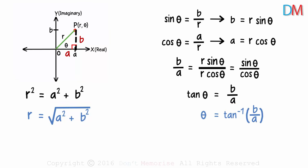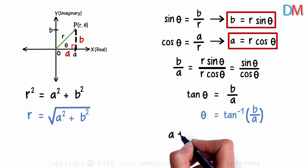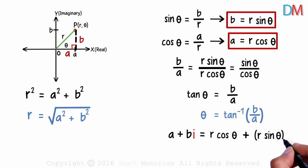So if we have the real and imaginary part of the complex number, we can represent it in the polar form as well. In the process of doing this, we've also derived a couple of other relations. a is r cos theta and b is r sin theta. So the complex number a plus bi can also be written as r cos theta plus r sin theta times i.